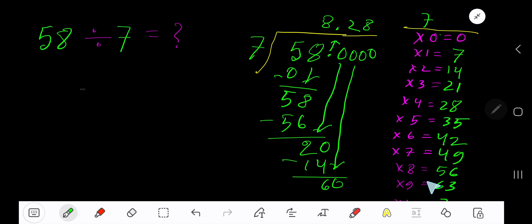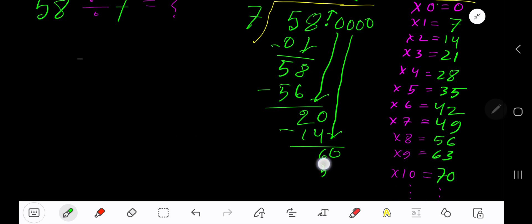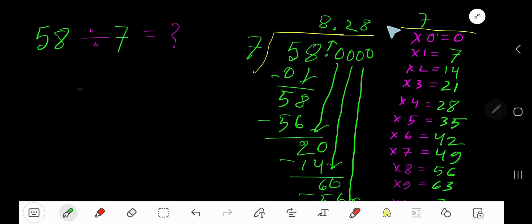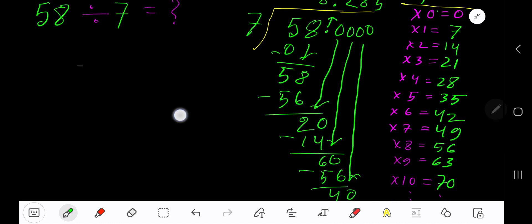Bring down another 0. 7 goes into 40 how many times? 5 times. 5 times 7 is 35. Subtract to get 5.